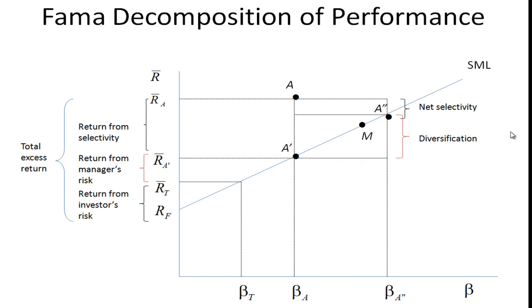This is a good way to see how the portfolio manager has done. If it turned out that net selectivity was zero, so this A double prime were right here, then the portfolio manager is simply earning extra return by using less diversification and taking on more risk. It's perhaps a better way to look at excess return than simply using Jensen's alpha. It's a way to evaluate what the manager has done based on how much diversification he's taken on, how much extra risk he's taken over what the investor targeted.